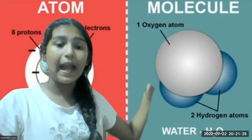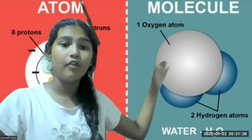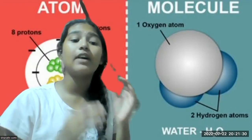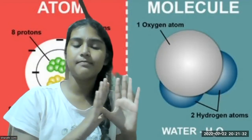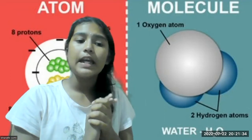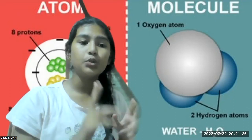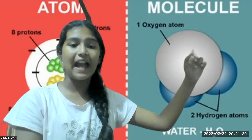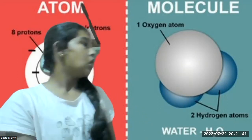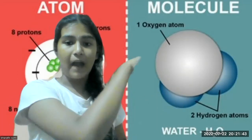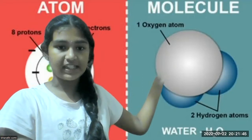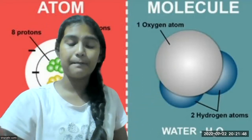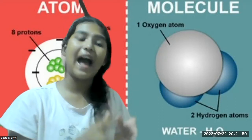There is one atom of oxygen — this is a molecule of water. The symbol for water is H2O, which means two atoms of hydrogen and one atom of oxygen. Here the white part represents oxygen, and the blue parts represent the two atoms of hydrogen.